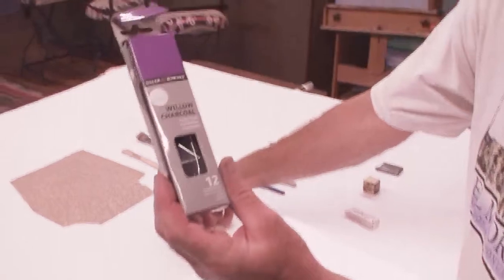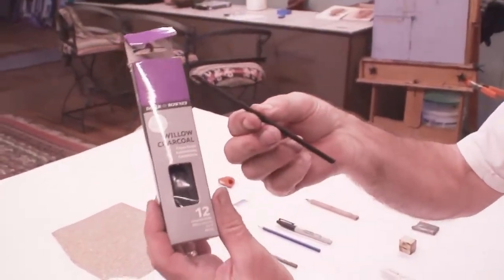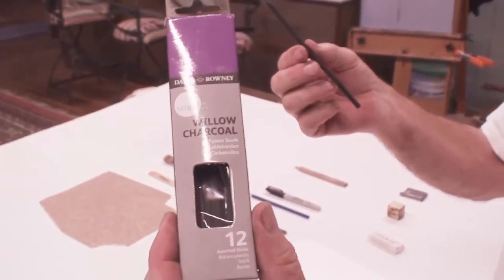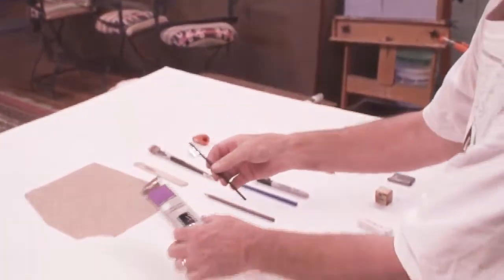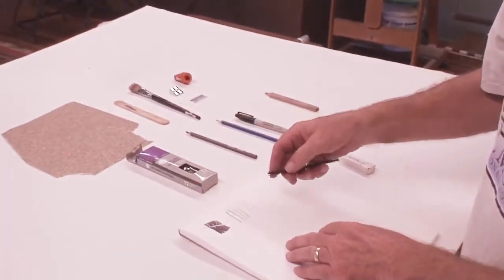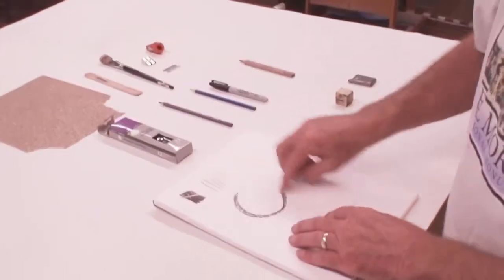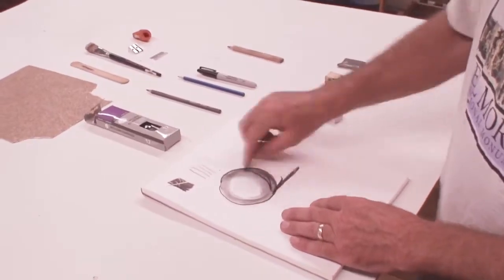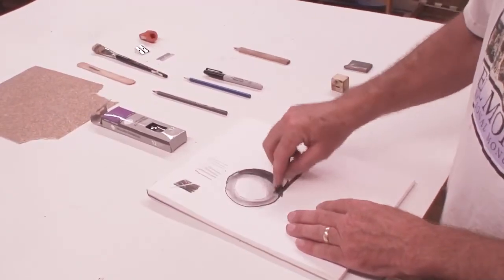This is willow charcoal. Buy this at a Walmart. Basically it's just charcoal for drawing. Makes a nice black mark that you can smudge. You can darken a lot of area quickly with this willow charcoal. You can use your finger to smudge with to create soft transition.